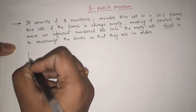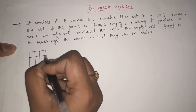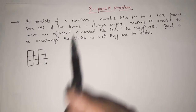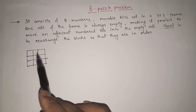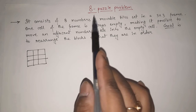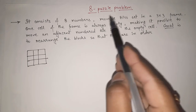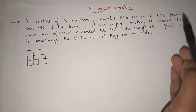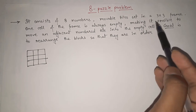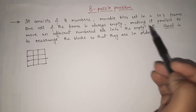A 3x3 frame will be there, meaning we have 9 boxes. Out of 9 boxes, 8 numbers will be present and 1 box will be empty. It consists of 8 numbers — movable tiles set in a 3x3 frame. One cell of the frame is always empty, making it possible to move an adjacent numbered tile into the empty cell.